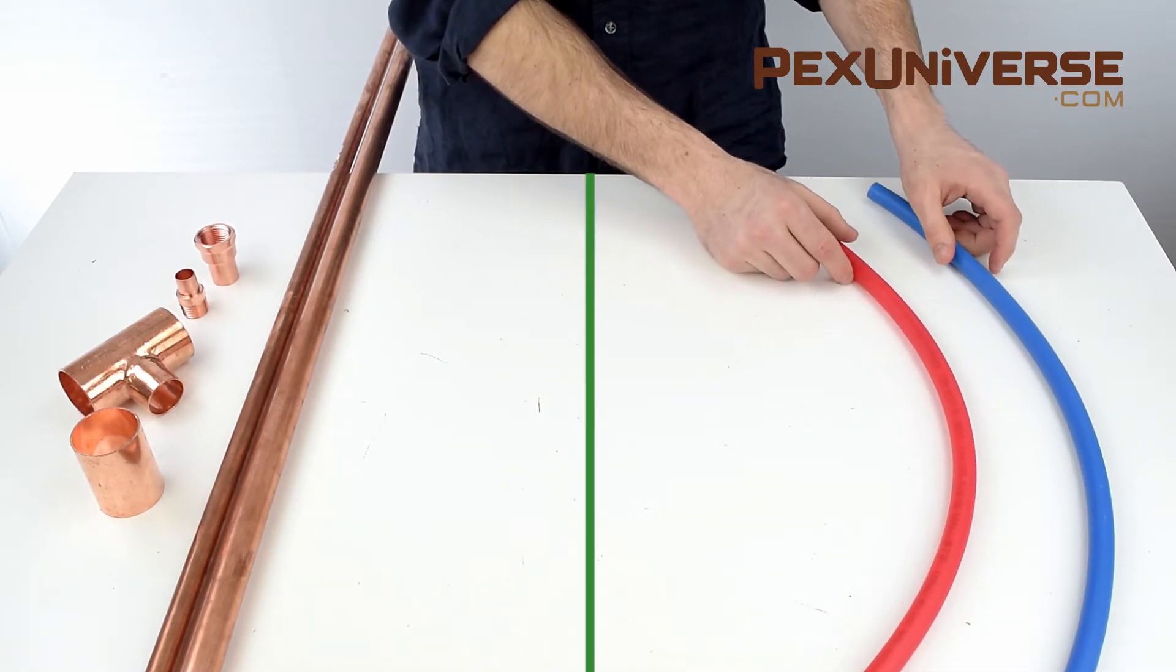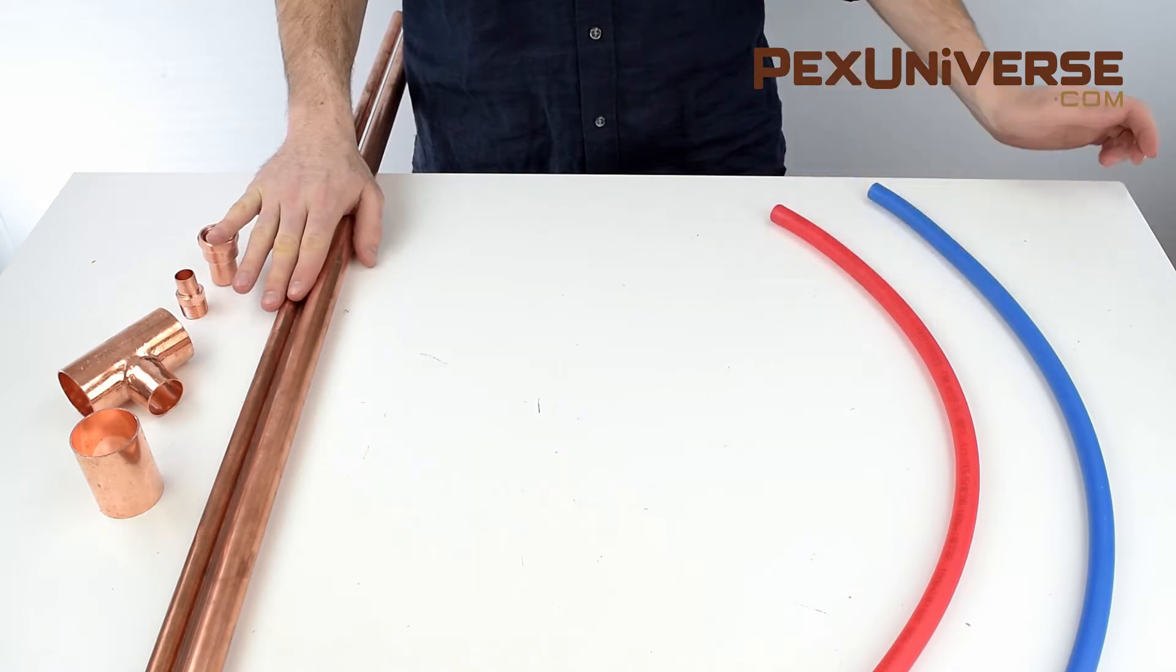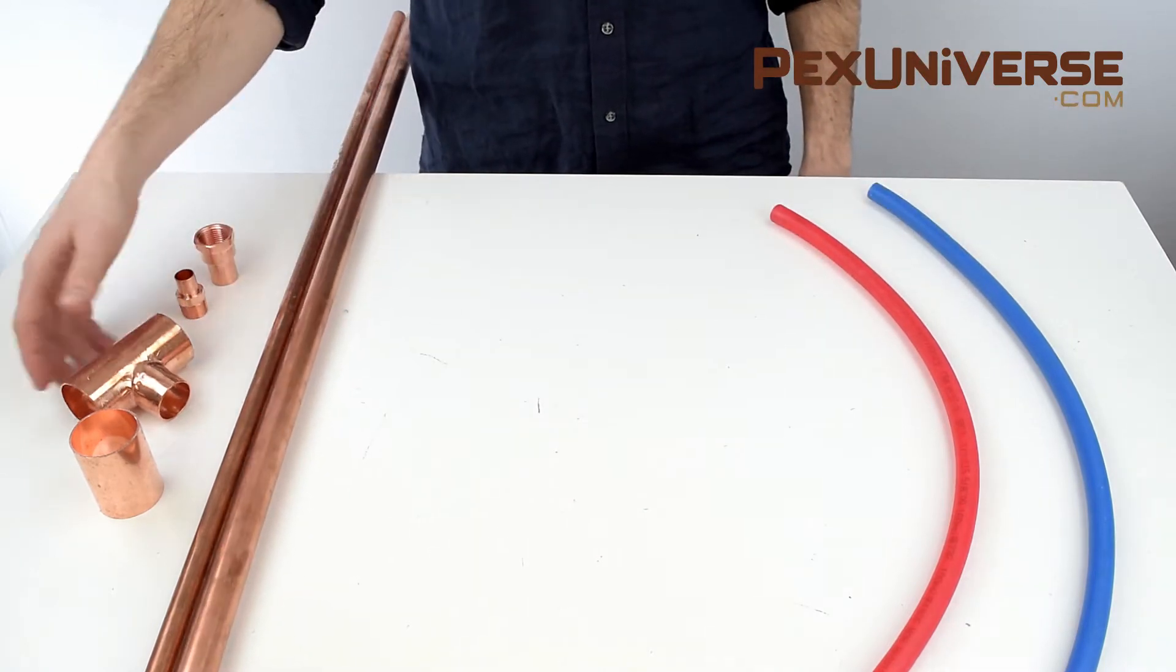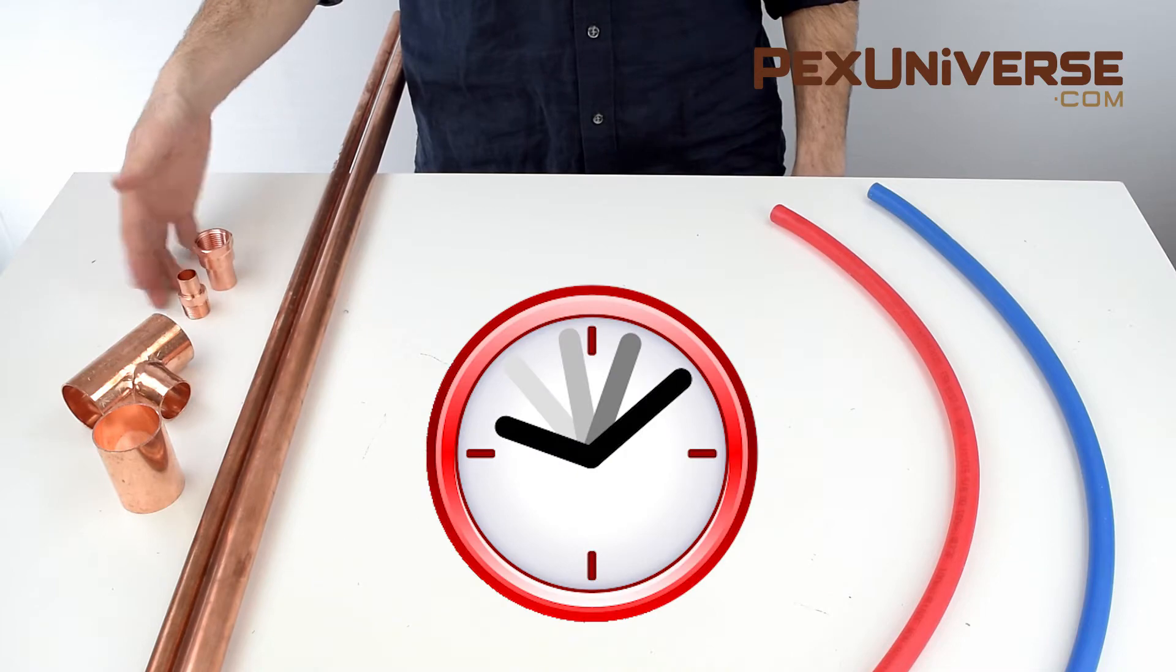PEX is less expensive than copper pipe as it's typically a third of the cost and fewer fittings are needed to install PEX, which means you save money on material and time with installation.